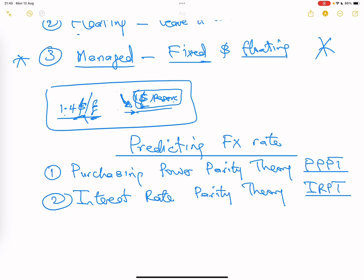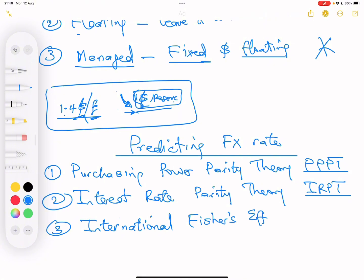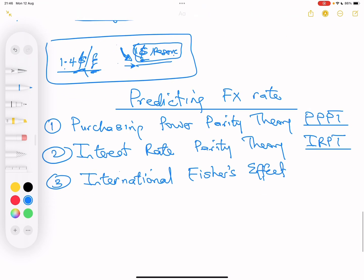And the third one is the International Fisher Effect. You've heard of this guy before when we did investment appraisal. So we'll look at these three because these are the three ways you can predict FX rates, and there are three different theories.